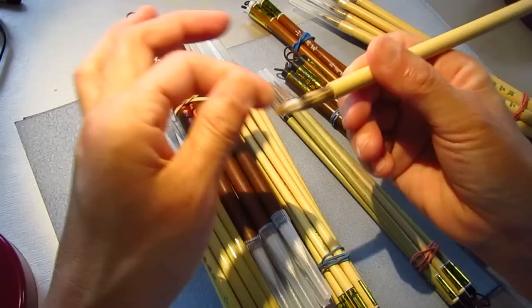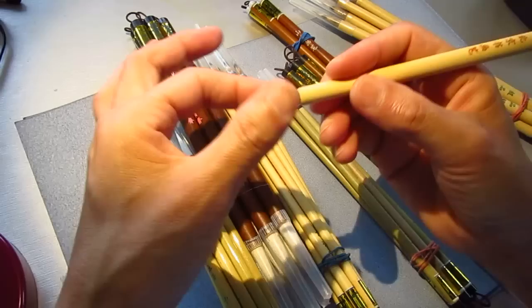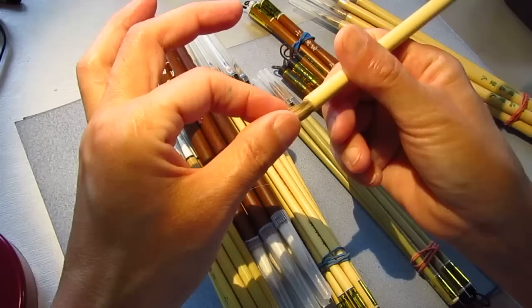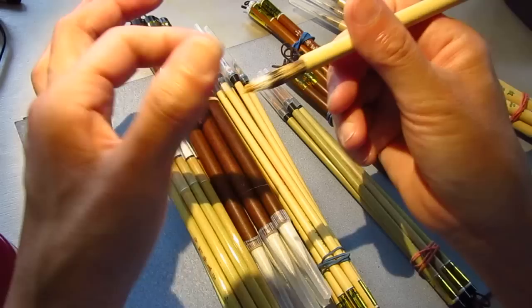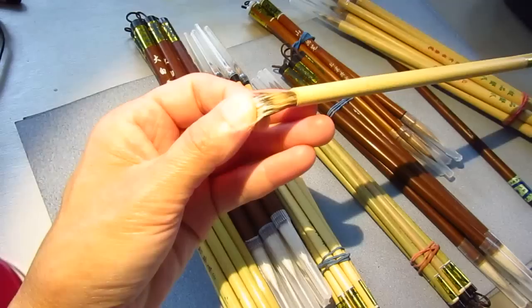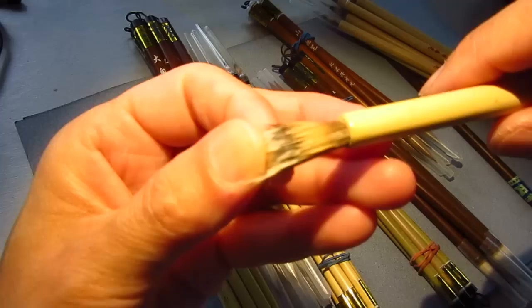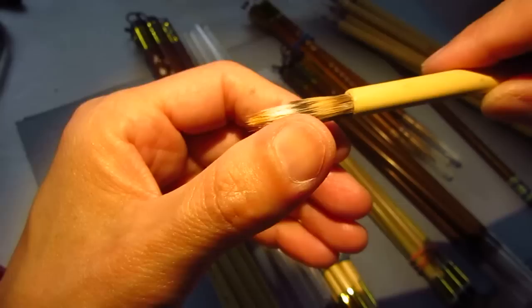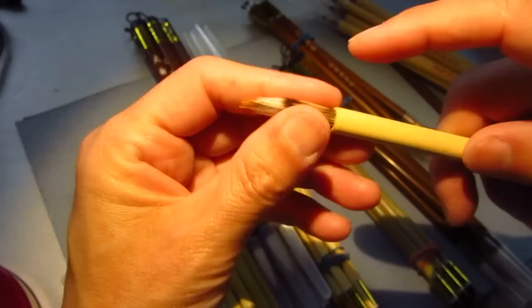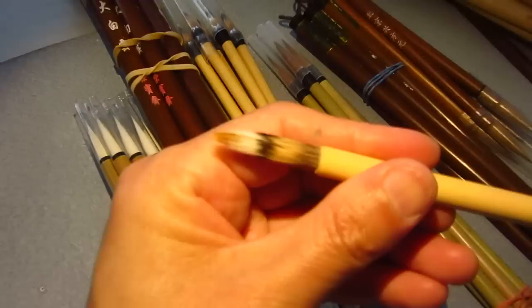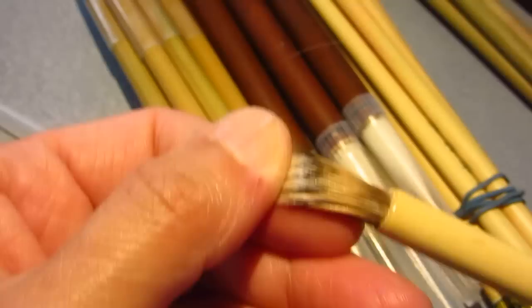This one is called xie zhao, it's called crab claw because it has a similarity of its shape. You can see there are one, two, three layers of hair. There is one layer of this black hair, then a white hair layer, and the center layer of long and slender hairs. They are all animal hair.